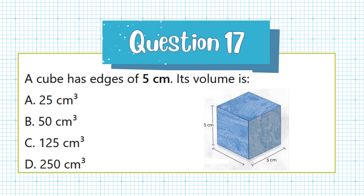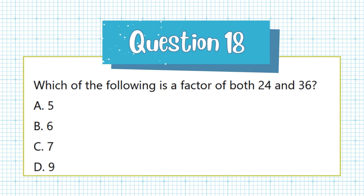Question 18. Which of the following is a factor of both 24 and 36? a. 5, b. 6, c. 7, d. 9.